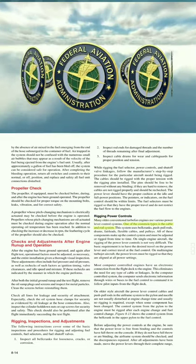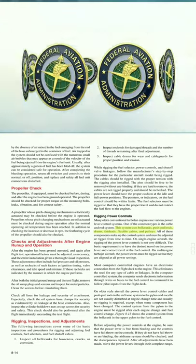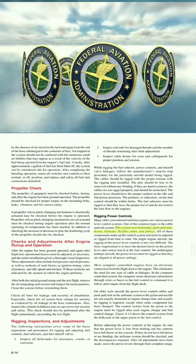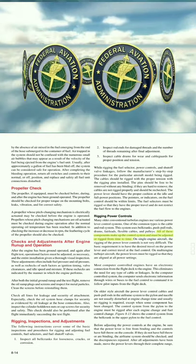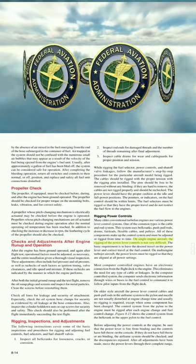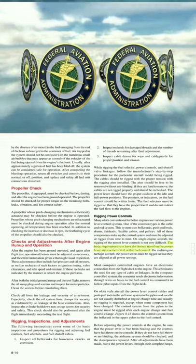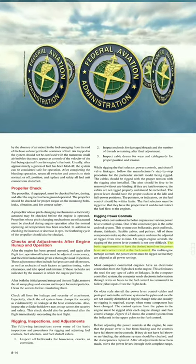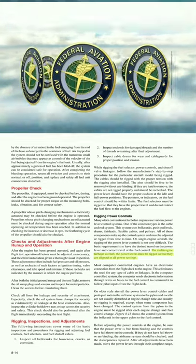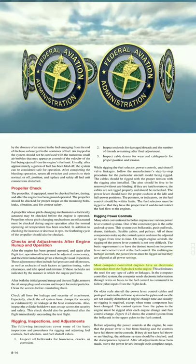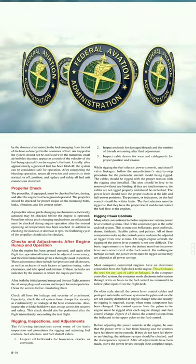Rigging Power Controls: Many older conventional turbofan engines use various power lever control systems, with the cable and rod system being common. This system uses bell cranks, push-pull rods, drums, fairleads, flexible cables, and pulleys that must be adjusted or rigged from time to time. On single-engine aircraft, rigging of the power lever controls is not very difficult — the basic requirement is to have the desired travel on the power lever and correct travel at the fuel control. On multi-engine turbojet aircraft, the power levers must be rigged so that they are aligned at all power settings. Computer-controlled engines have an electronic connection from the flight deck to the engine, eliminating the need for cables or linkages.